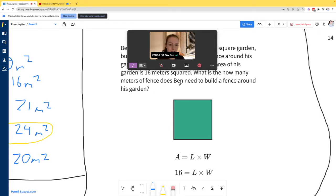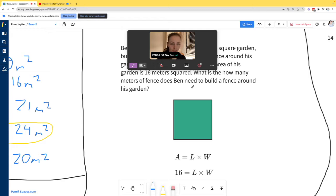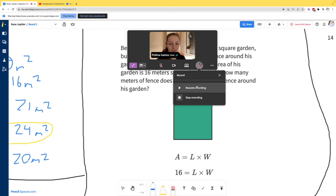In Pencil Spaces, you also have the ability to pause or resume your recordings at any point. Just click on the recording button again and click pause recording to intermittently skip a portion. Then to resume the recording, just click the recording button again and click resume. Now the recording has begun.